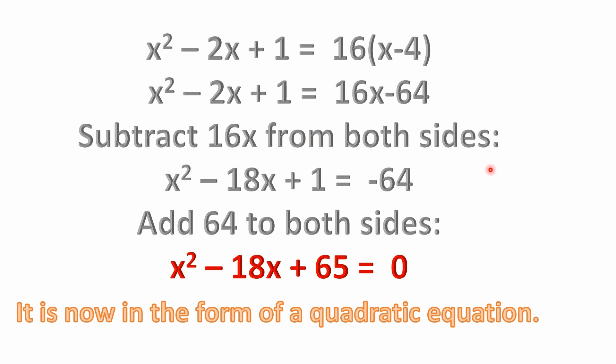We want to simplify this down further. We're trying to solve for x. So we can subtract 16x from both sides of the equation. If we subtract 16x, this goes away, leaving us just with the minus 64 on the right. And on the left side, we have minus 2x. So if we subtract 16x, that leaves us with minus 18x here. So x squared minus 18x plus 1 equals minus 64.